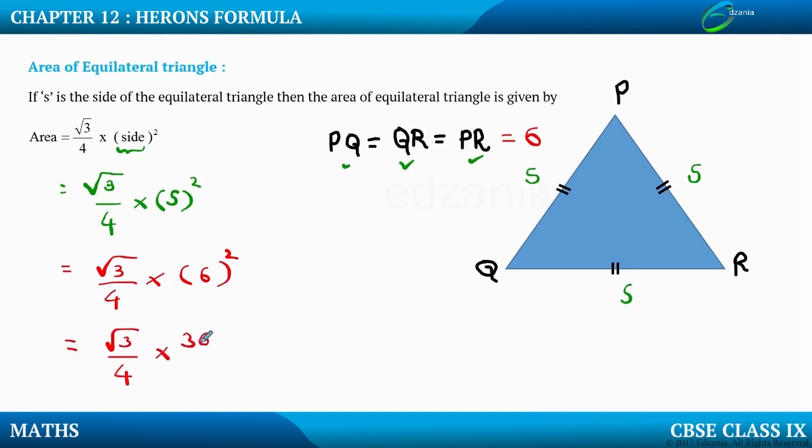Which can be further equal to root 3 upon 4 into 6 square will give you 36. This will become 36. 4 and 36 will get cancelled, you will get 9. The final answer will be 9 root 3 square units.